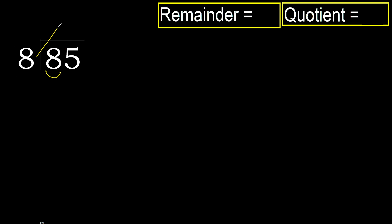8 multiply by 2 is 16. 16 is greater. Multiply by 1 is 8. 8 is not greater, subtract — remainder is 0.